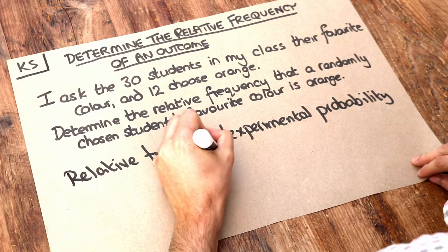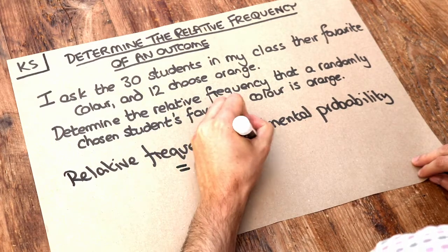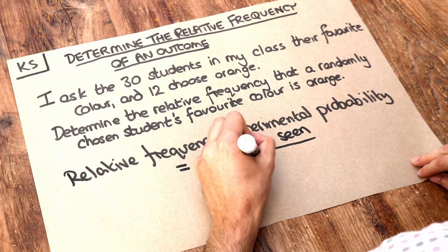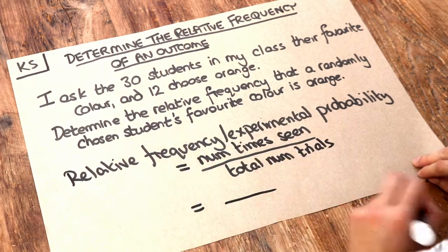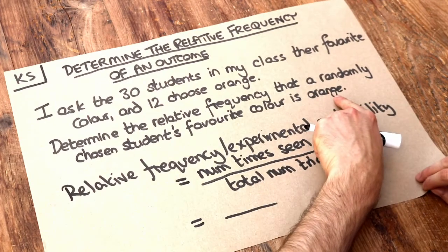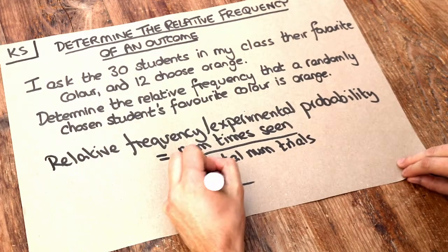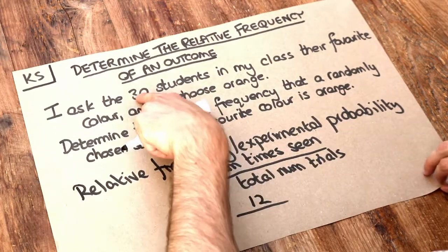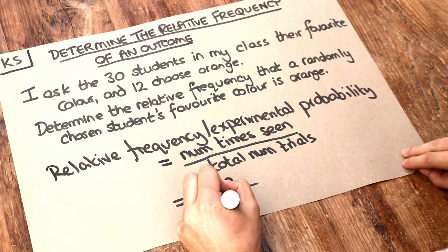So it's the number of times we see something divided by the total number of trials. So in this particular case the number of times we saw someone pick orange was 12 and we do that as a fraction of the total number of trials. So we asked 30 students so the number of trials was 30.